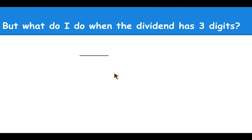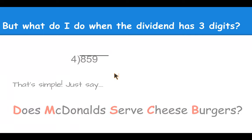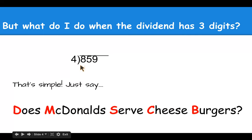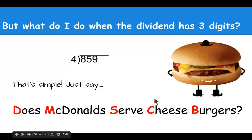But what do you do when your dividend has three digits, such as 859 divided by four? That's simple. We just say, does McDonald's serve cheeseburgers?